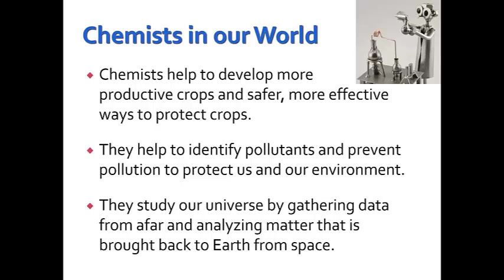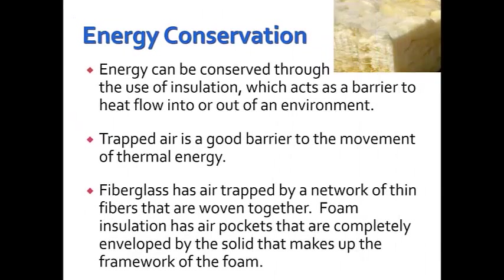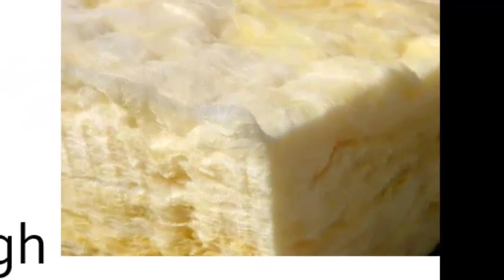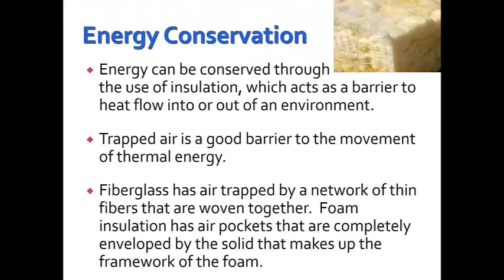We've talked about a lot of the things that chemists do in a very broad way. Now we're going to look specifically within some of these different areas. First, we're going to consider energy conservation. Energy can be conserved through the use of insulation, which acts as a barrier to heat flow into or out of an environment. Trapped air is a great barrier to the movement of thermal energy. Fiberglass has air trapped by a network of thin fibers that are woven together. Foam insulation has air pockets completely enveloped by the solid that makes up the framework of the foam.